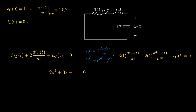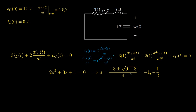The second derivative has a coefficient of two, the first derivative has a coefficient of three, and the function itself has a coefficient of one. This is our characteristic equation, and using the quadratic formula we find that the roots are negative one and negative one-half.